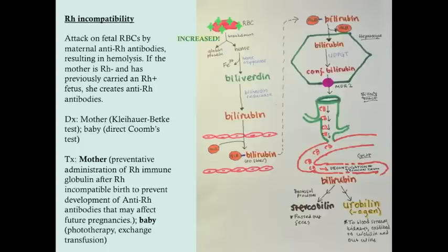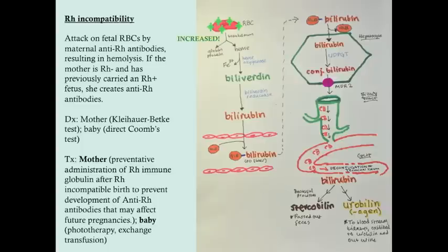This happens if the mother is RH negative and has previously carried an RH positive fetus. Since then she's created anti-RH antibodies, and now she's carrying another RH positive fetus — those anti-RH antibodies can cross the placenta and attack the baby's red blood cells. If mom is RH negative and it's her first pregnancy with an RH positive fetus, she's not going to create antibodies to attack that fetus. But if she has had a previous pregnancy with an RH positive fetus, then the antibodies are there and can attack the subsequent fetus. We can prevent this, but if the mother didn't receive adequate care, it can come into play.